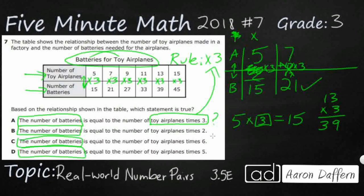Let's look at the other choices. The number of batteries is equal to the number of toy airplanes times 2 — so instead of times 3, they're wanting us to do times 2. No, that's not going to work because 5 times 2 is 10, and 7 times 2 is 14. The number of batteries is equal to the number of toy airplanes times 6 — no, it's not going to be times 6 because 5 times 6 is 30.